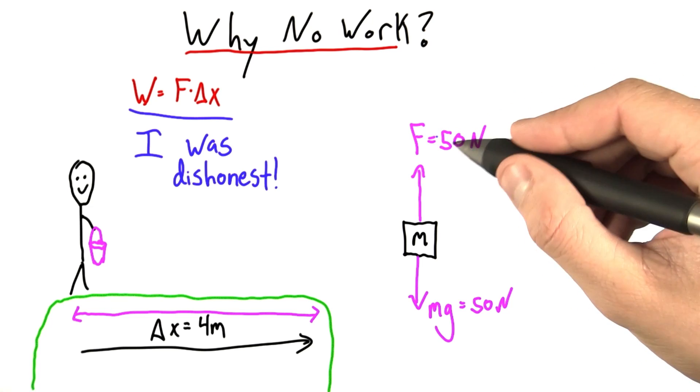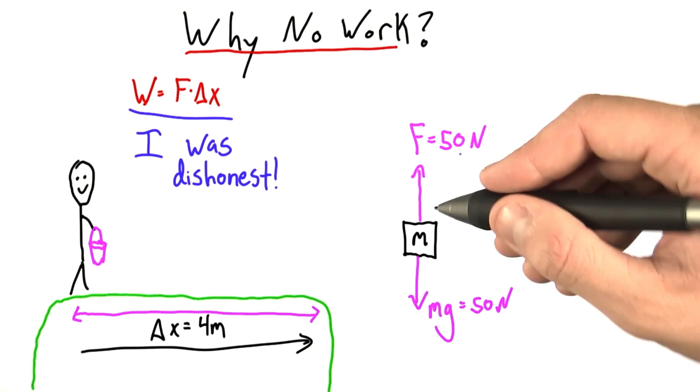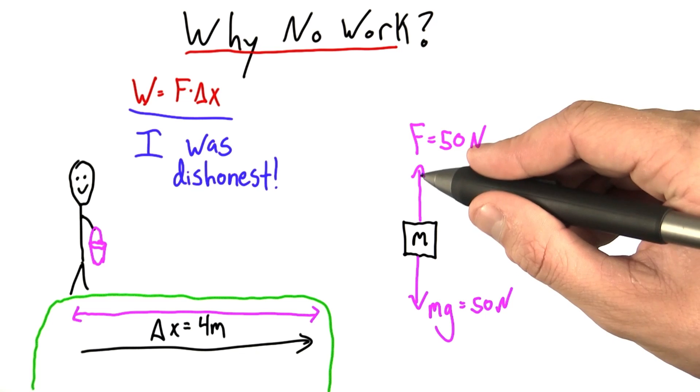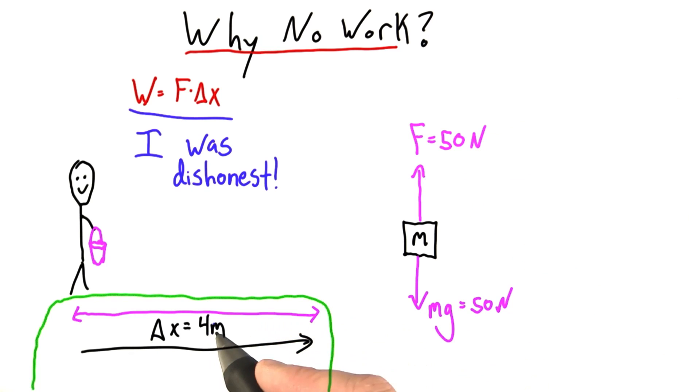Notice that when I write force, I have to write 50 newtons. That's the size, but I write an up arrow to represent the direction. When I write delta x, 4 meters is the distance, but that distance was to the right.